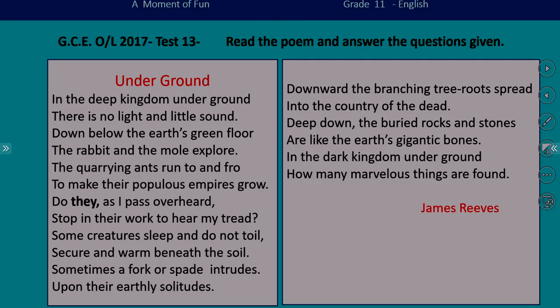Now it is clear that we are going to read a poem about something happening underground. Let's read the poem: 'Underground' by James Reeves. In the deep kingdom underground there is no light and little sound. Down below the earth's green floor the rabbit and the mole explore. The quarrying ants run to and fro to make their populous empires grow. Do they as I pass over, stop in their work to hear my tread? Some creatures sleep and do not toil, secure and warm beneath the soil. Sometimes a fork or spade intrudes upon their earthly solitudes. Downward the branching tree roots spread into the country of the dead. Deep down the buried rocks and stones are like the earth's gigantic bones. In the dark kingdom underground, how many marvelous things are found.